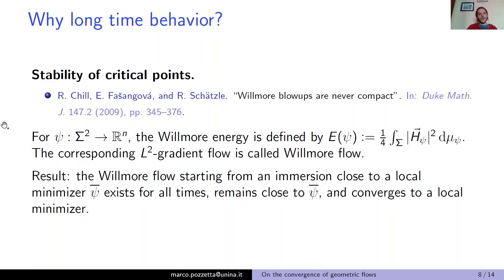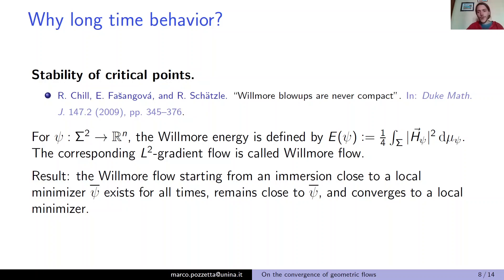The Willmore energy for a given immersion of a surface in R^N is basically the squared L² norm of the mean curvature of the immersion. You perform the first variation, recognize an L² duality, and define the L² gradient flow to be the Willmore flow. In general, it is known that the Willmore flow develops singularities — meaning it is false in general that your flow exists for all time, and something goes wrong in finite time.